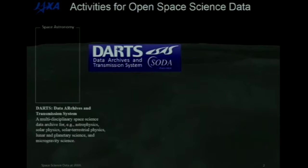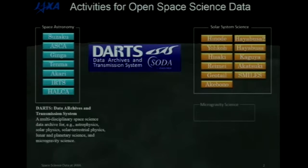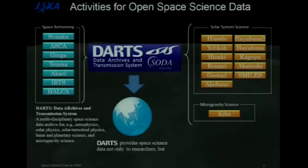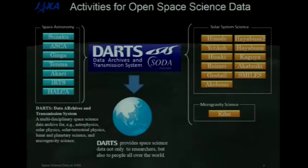We have a data archive called DARTS, which provides open science data including space astronomy and solar system science data. Those data were obtained by many science satellites, such as X-ray astronomy, infrared telescope, solar astronomy, Earth's magnetosphere, and also microgravity science from Kibo.